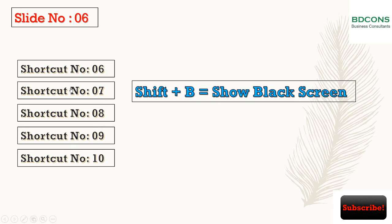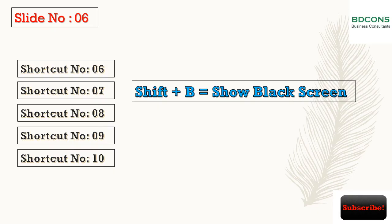Shortcut 7: Black screen. Press Shift+B to show a black screen. To return back to your slideshow, press Shift+B again.